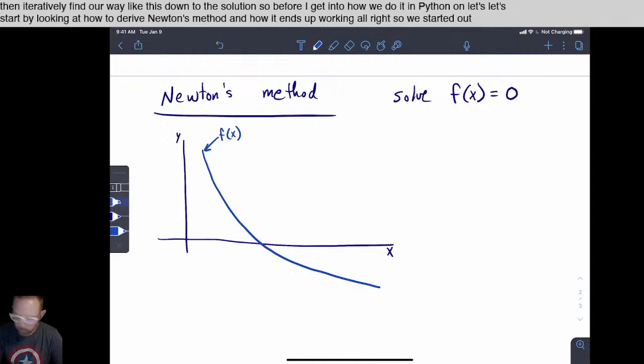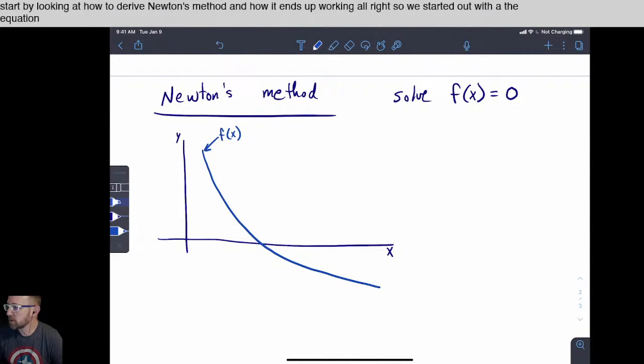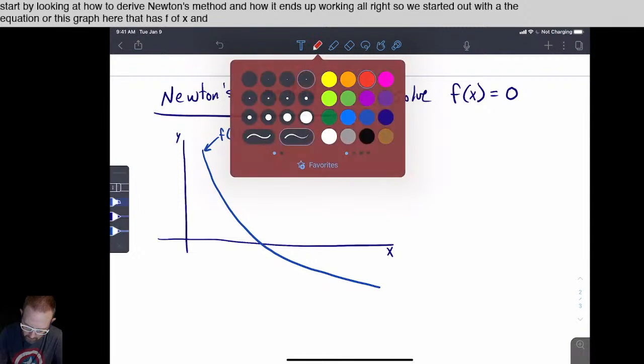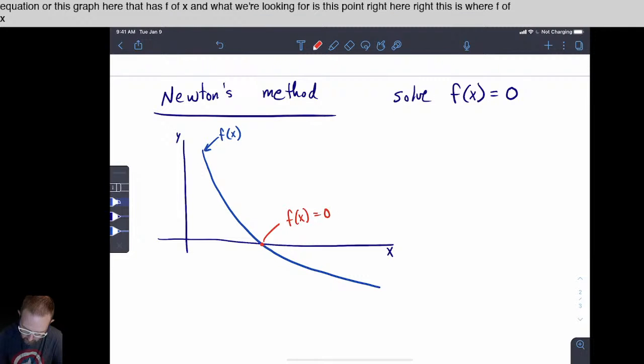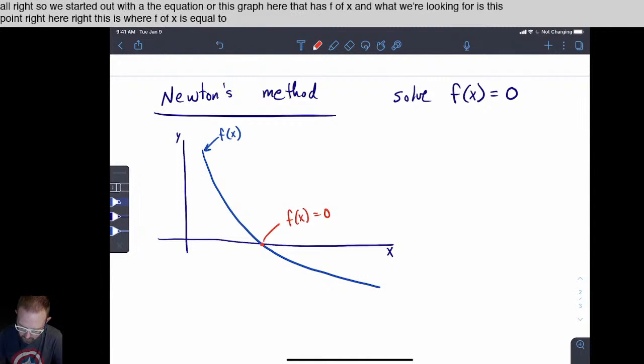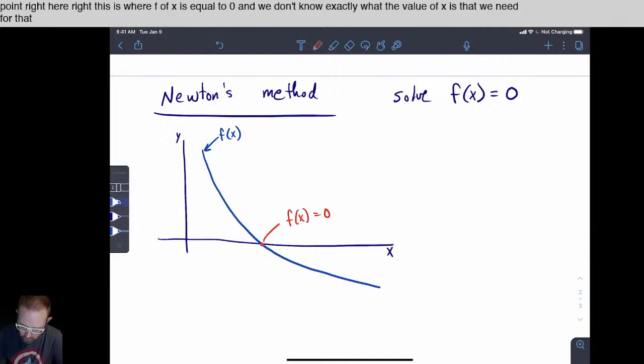All right, so we start out with the equation or this graph here that has f of x. And what we're looking for is this point right here, right? This is where f of x is equal to zero. And we don't know exactly what the value of x is that we need for that.